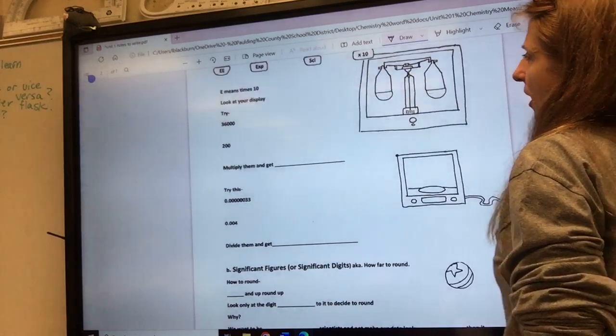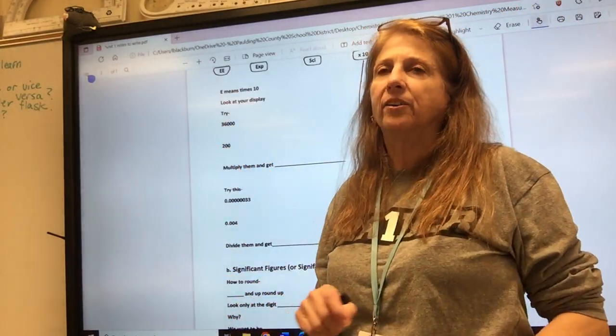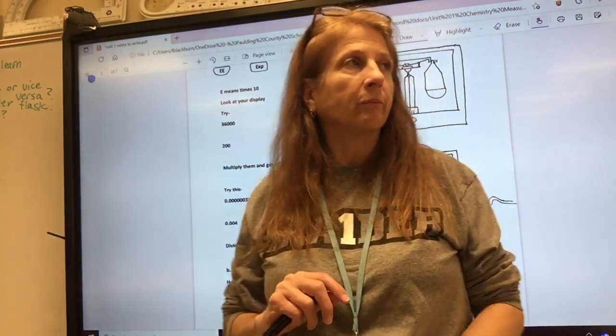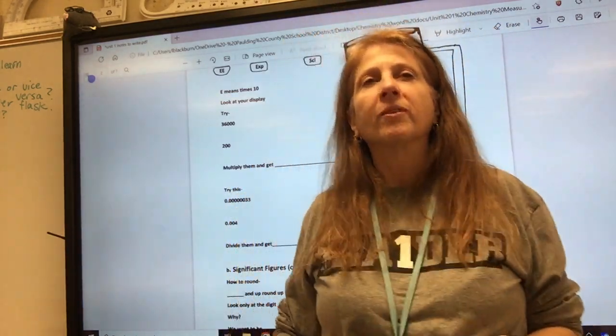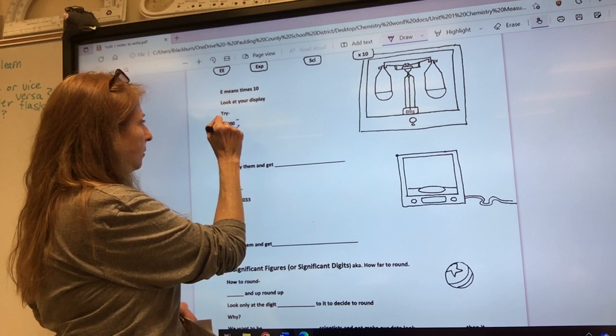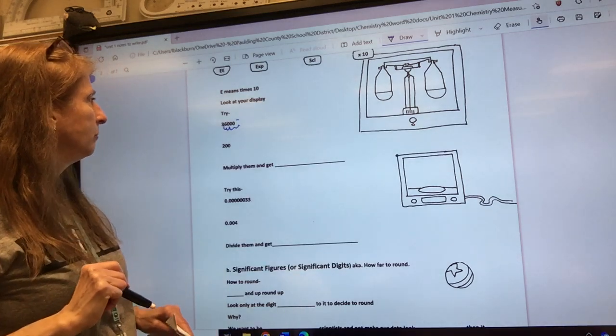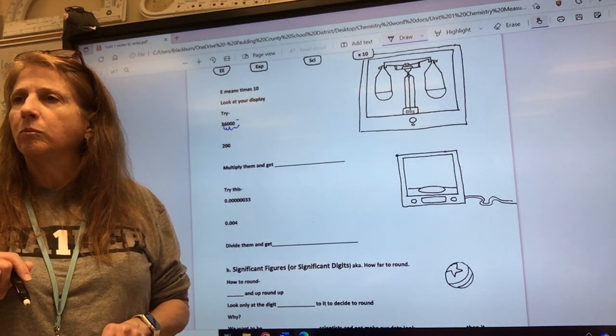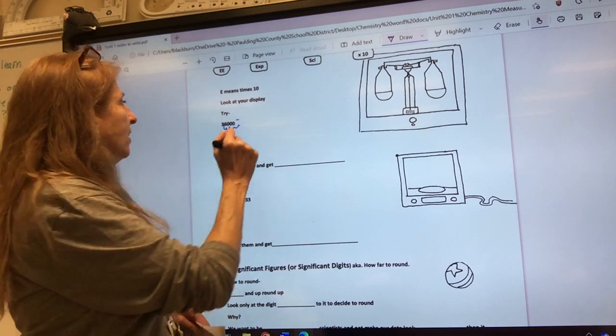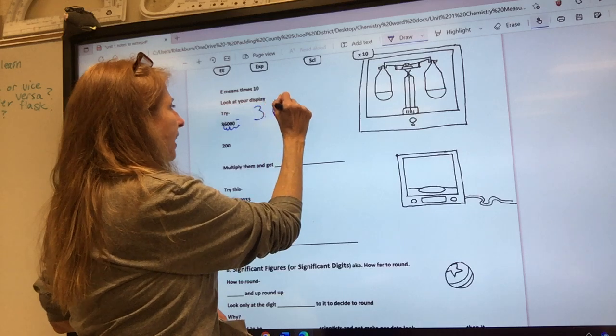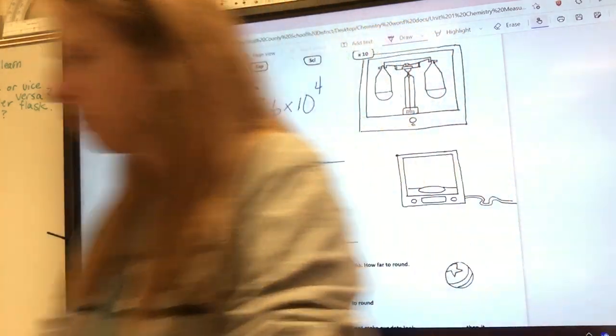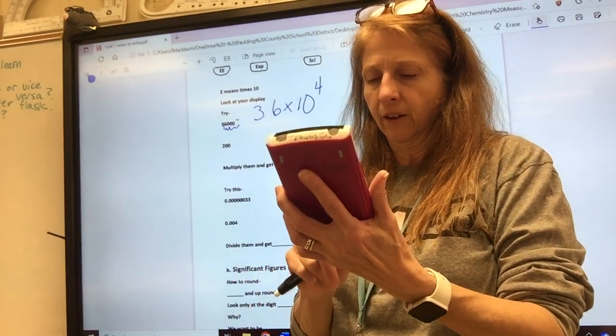In your calculator you're looking for EE, EXP. If you have a Casio it might say SCI or it might say times 10. If you have a Casio I will show you individually how to do it. I hate Casios, I prefer you go get a TI, but if you got one and you don't have money for another calculator, so be it and I'll show you how to use it.